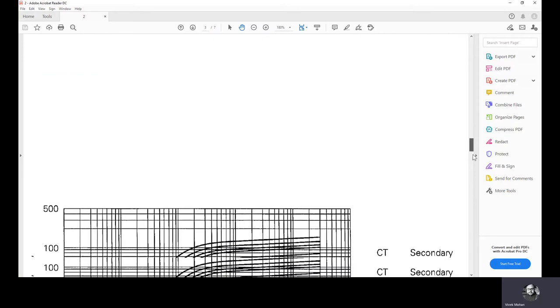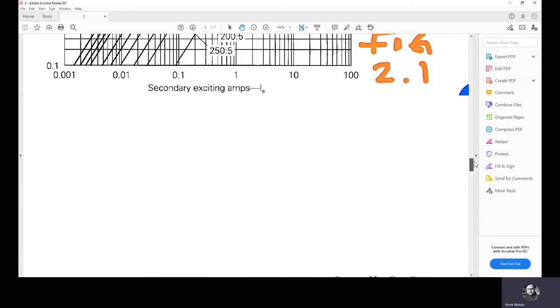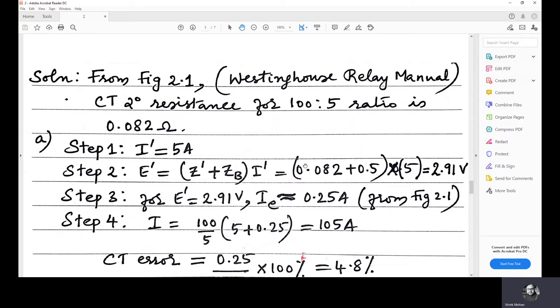0.5 plus 0.082 which is 0.582 is the impedance, total impedance. This one. Z dash plus ZB, 0.082 plus 0.5. Now, I dash equals 5 amps. It is given. E dash equals Z dash plus ZB into I dash. The total impedance into I dash which is E dash. So, 0.582 into 5. This is given 5 amps which is equal to 2.91 volts.